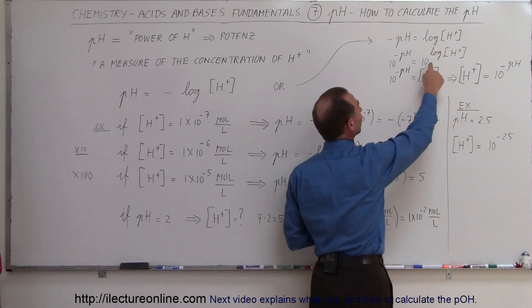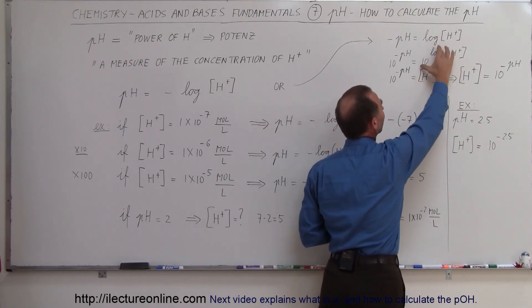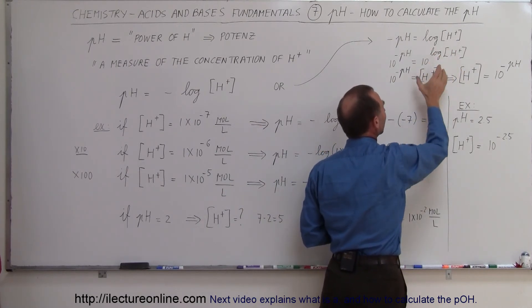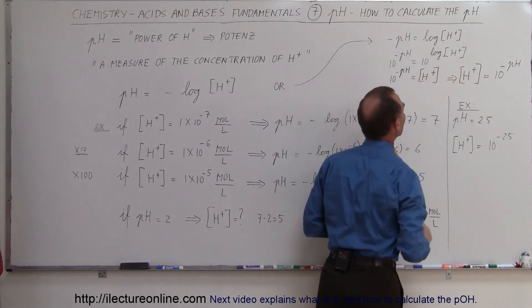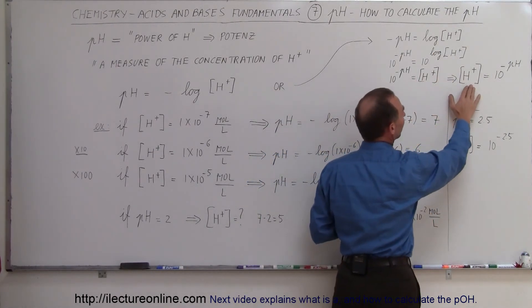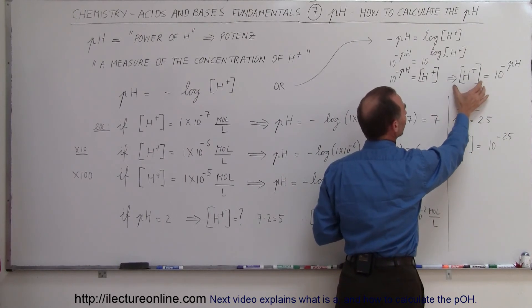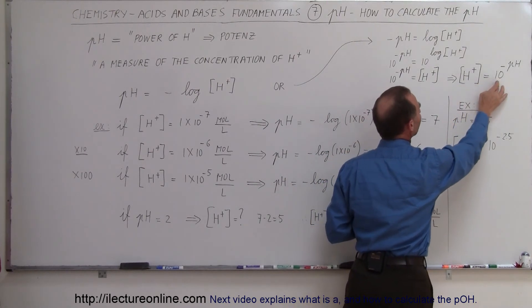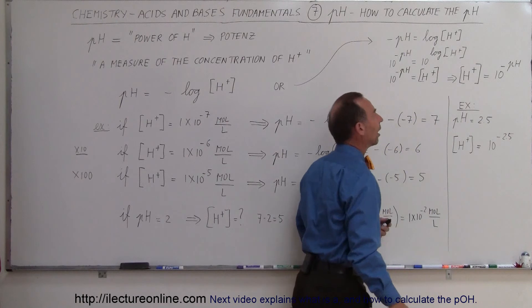And of course, 10 raised to the log of something, this cancels out. And we simply end up with the concentration of the hydrogen ion. If we then turn the equation around, so we put the thing we're looking for on the left side of the equation, the concentration of the hydrogen ion is equal to 10 to the minus pH of the solution.